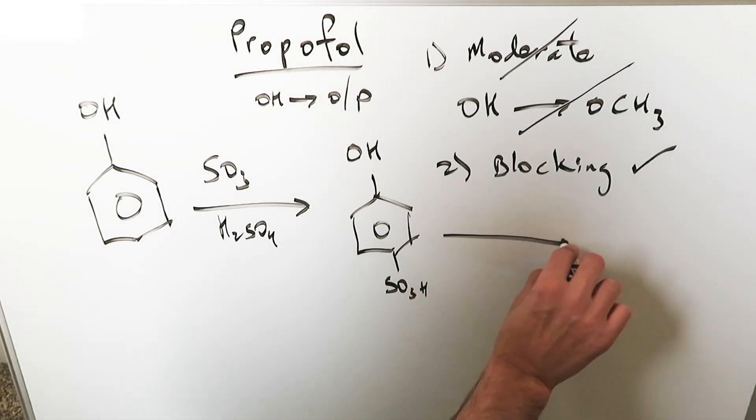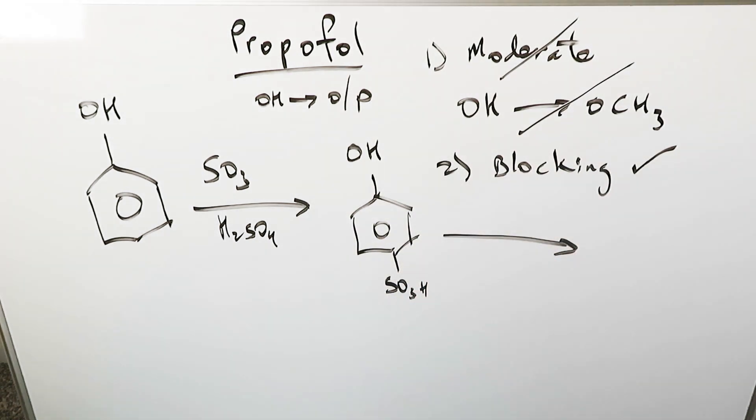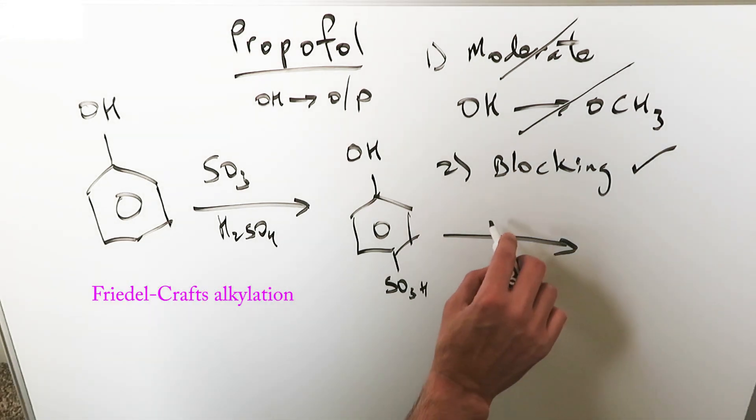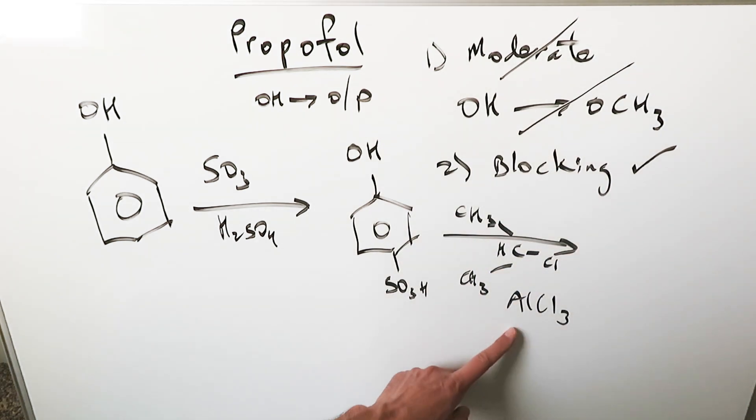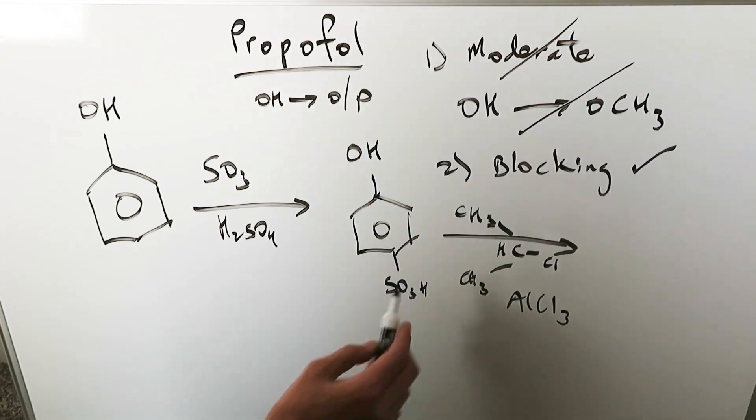So we have blocked it. Now the next step is to bring in a Friedel-Crafts alkylation step. I will react everything here with the CH3, CH3 and then I have an H here and a Cl. I'm reacting here with isopropyl chloride in the presence of a catalyst AlCl3, aluminum chloride and isopropyl chloride.